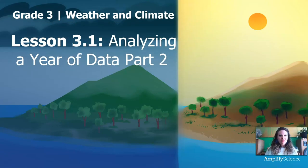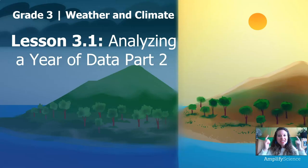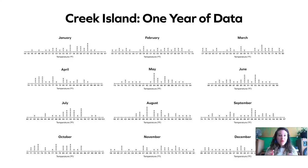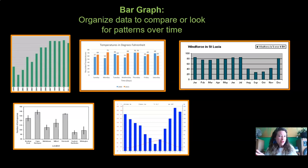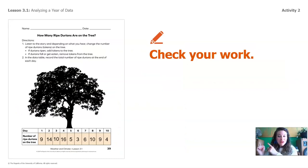Hi, welcome back. This is Grade 3, Weather and Climate, Lesson 3.1, Analyzing a Year of Data, Part Two. I'm Scientist Kate. For this part of the lesson, you won't need any extra materials — just a curious science brain. Remember in Part One, we got a full year of data from Creek Island, but it was sent to us in line plots. Line plots are really hard to understand when you have a lot of them, so we decided we were going to make a bar graph. I hope you still have your durian data from the activity, because you'll need it to make the graph today.